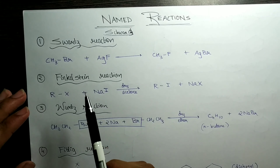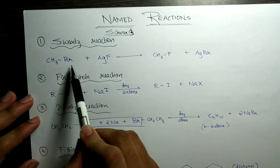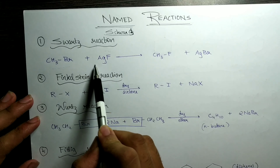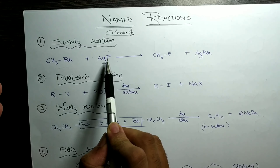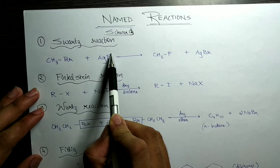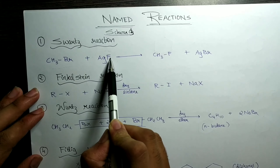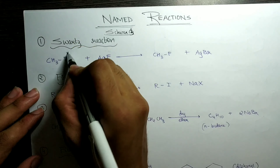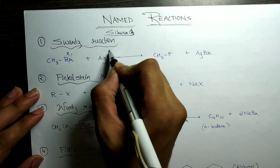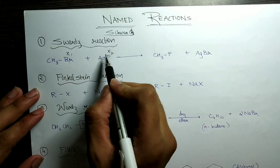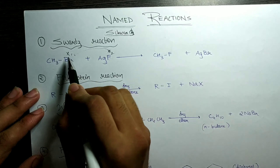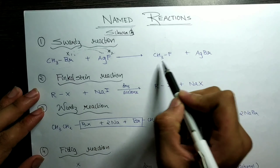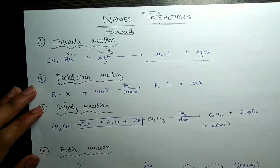I have only picked named reactions such as the Swartz reaction, Finkelstein, Wurtz, Fittig, Kolbe's reaction, etc., and there are a couple more sheets also. We will be discussing each and every one of them, and wherever it's necessary I will be discussing the mechanism because I have a pretty good idea where mechanisms can be asked.